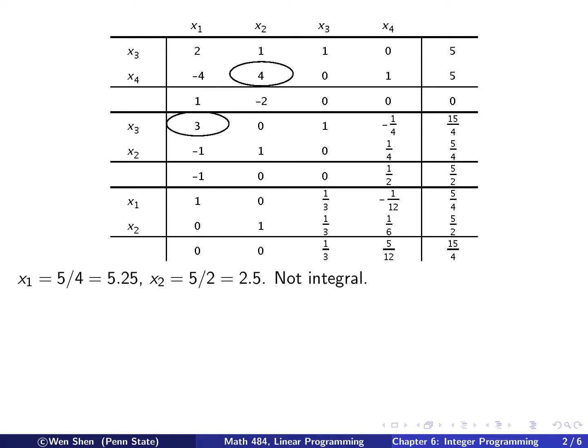And then we, these are the two slack variables we added. And then we pivot here for this negative one. And we get the second part of the tableau, a negative coefficient. And we pivot here, and we get a third part of the tableau, which we see is all positive. So optimum is reached. So we see that x1 is 5 over 4, x2 is 5 over 2, and they are not integral. So we need to do the cutting plane algorithm.